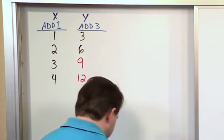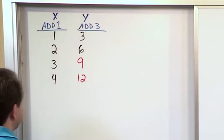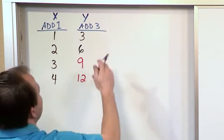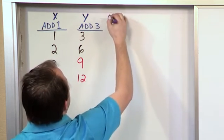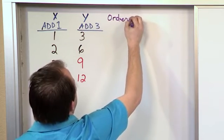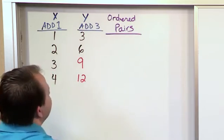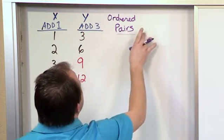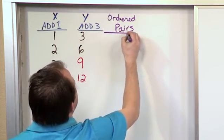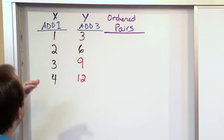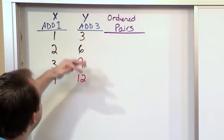Now what we want to do is write down what we call ordered pairs. So I'm going to write that over here. I'm going to say ordered pairs. All it means is you're trying to put the numbers together and group them together with a comma.